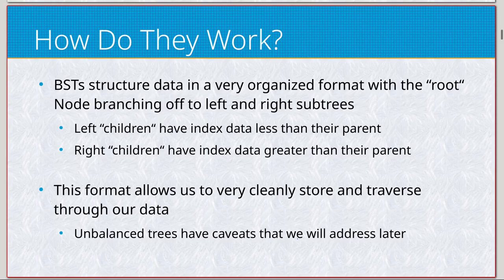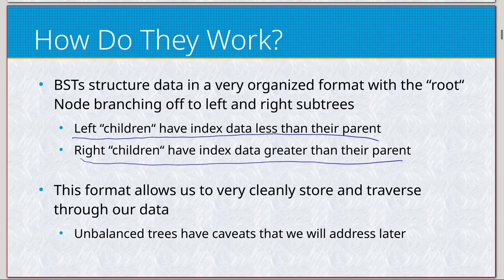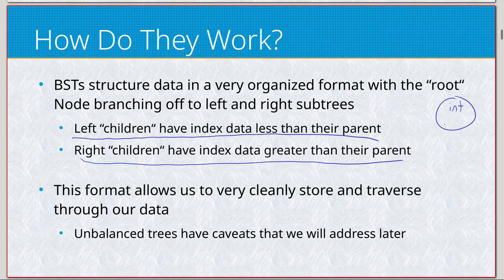The left child has index data less than the parent; the right child has index data greater than the parent. Nodes always need some numeric value to maintain the left-right relationship. But if you want, you can also include additional character data so the node has data outside the numeric value — for example, a Morse code tree is something you can do with a binary search tree.